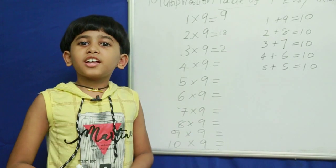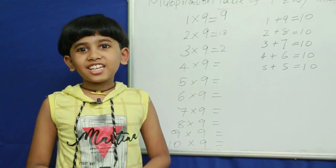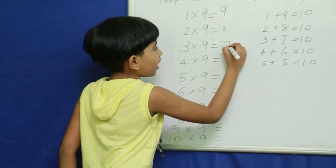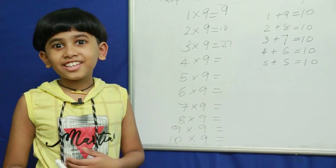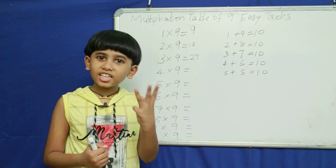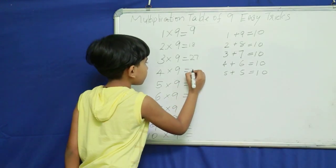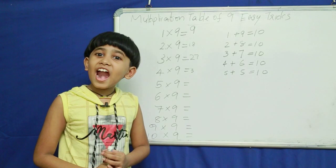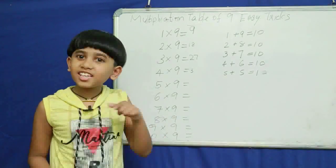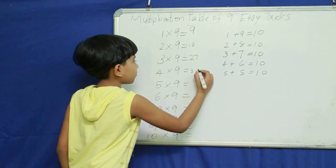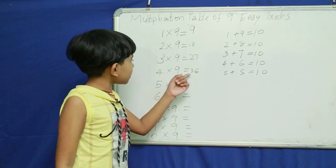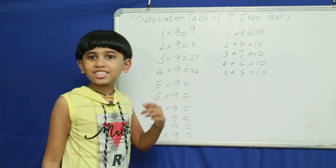Next, predecessor of 4 — three. What do you add to 4 to get 10? Six. So 4 nine's are 36.